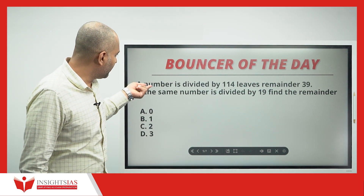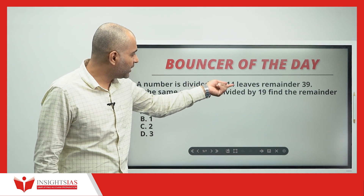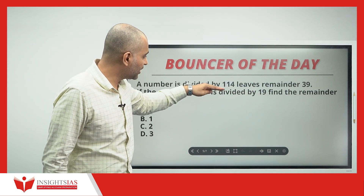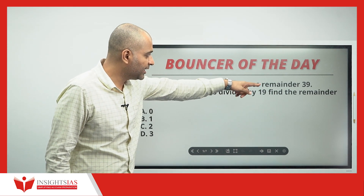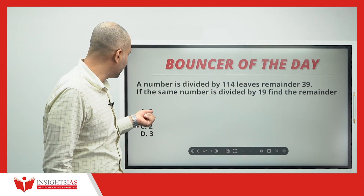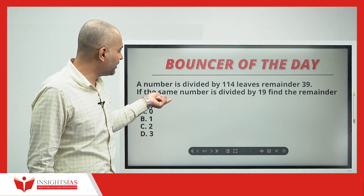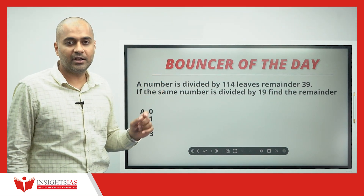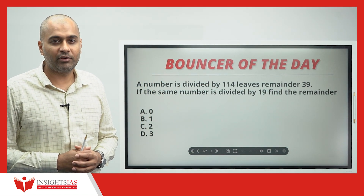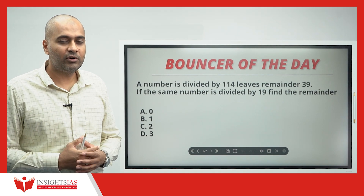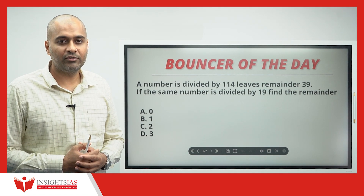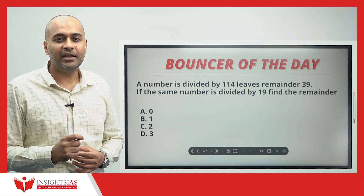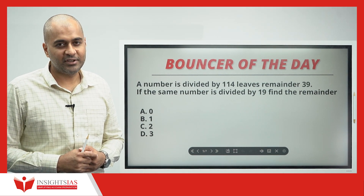A number is divided by 114 and leaves a remainder of 39. It is not completely dividing — the remainder is 39. If the same number is divided by 19, find the remainder. This is also a remainder concept question. Try to solve this question and post the answers in the comment section.